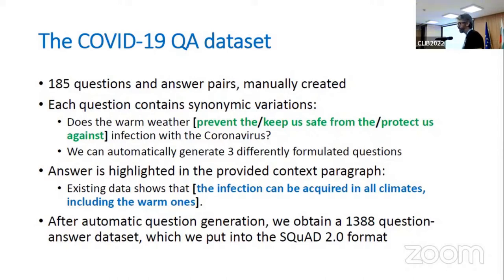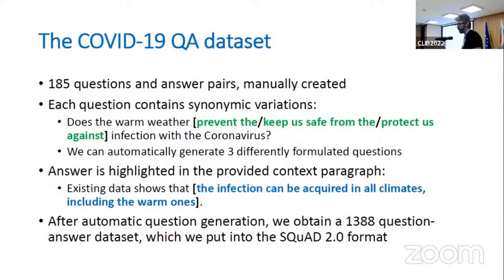By doing so, we can automatically generate a lot of semantically equivalent questions about the same thing. For instance, for a given sentence you can automatically formulate questions which ask the same thing. Each question is paired with an answer, which is also highlighted in the provided paragraph. After automatic expansion, we get a 1,398 question-and-answer dataset, which is easy to convert into the SQuAD 2.0 format for QA model training. The dataset was manually created over a period of six months last year.